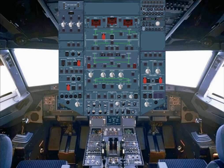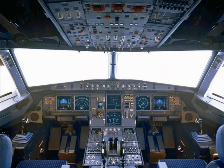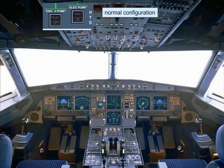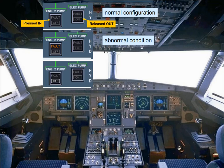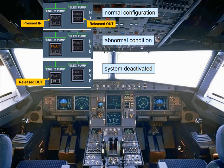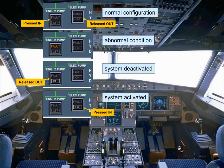Let's look at some switches. For the majority of the push-button switches installed on the overhead panel, a logic is applied. Normal configuration: no light is on, in the lights-out position, in or out. Abnormal condition: amber fault light, which helps to identify the switch related to an abnormal condition. White light: when normally a system should be operating but if it is deactivated, a white OFF light comes on. When normally a system should not be operating but if it is activated, a white ON light comes on.